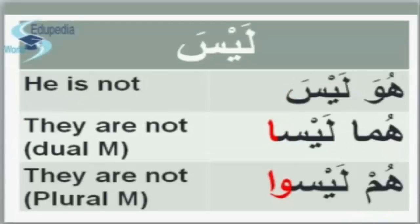He is not. 'He' or 'he is' in Arabic is هو. He is not: هو ليس. ليس means he is not and there is no change. They are not — dual masculine. 'They are' is هُمَا, and they are not is هُمَا ليسَا. Here سَ is a short sound in ليس, while in ليسَا it is a long sound by adding ا at the end. هُمَا ليسَا — they are not, dual masculine.